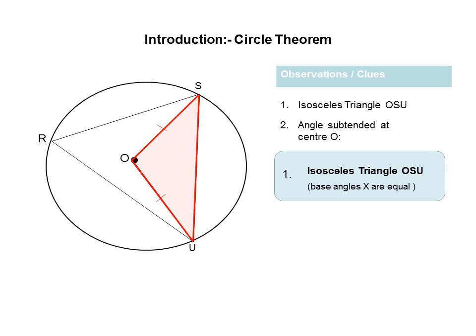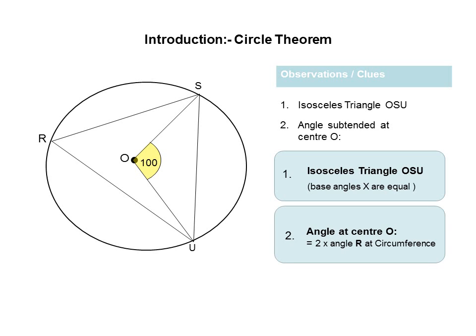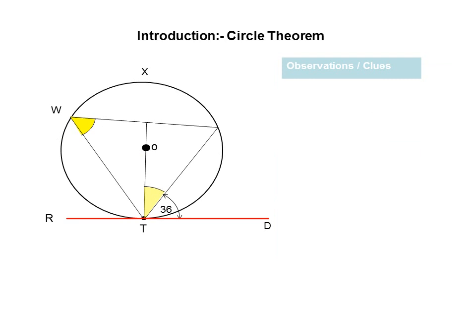For an isosceles triangle, we know that the base angles must be equal, and therefore if one base angle is equal to 40 degrees, the other base angle will also be 40 degrees. By simply recognizing that angles in a triangle add to 180 degrees, my angle at O at the center would be 100 degrees. This takes me into the application of clue number two: angles at the center is equal to twice the angle at the circumference. So if angle O is equal to 100 degrees, angle R is one half of that, or 50 degrees. Two very simple clues and straightforward application of theorems.